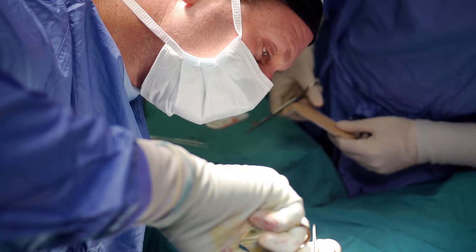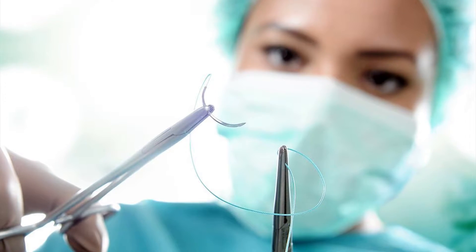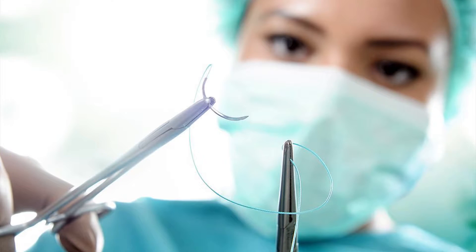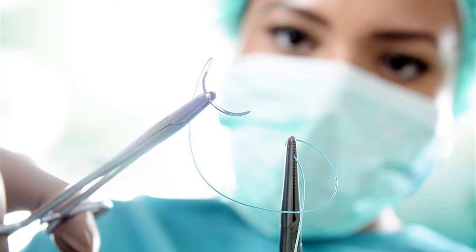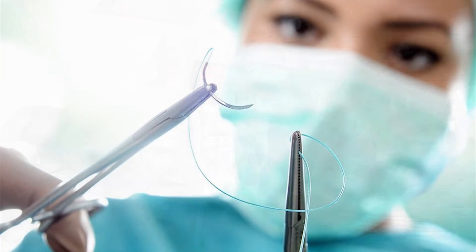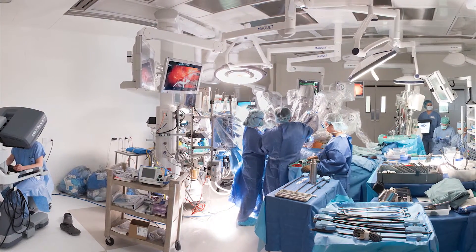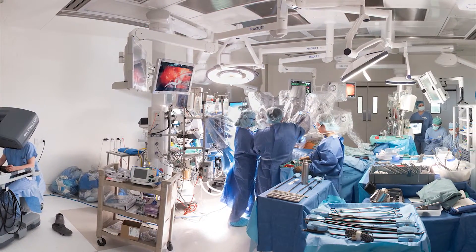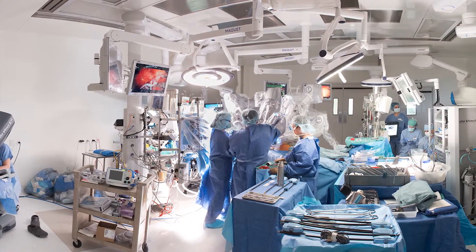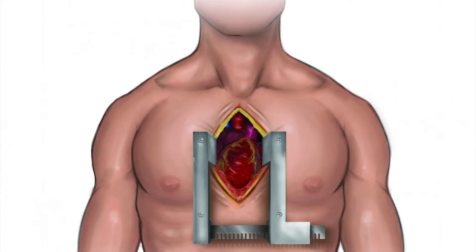A large incision of about five to eight inches is made in the chest through your breastbone, and it is opened using a surgical retractor to expose your heart. This allows the surgeon to view and access the surgical area. After completing the procedure, the incision is closed with stitches.